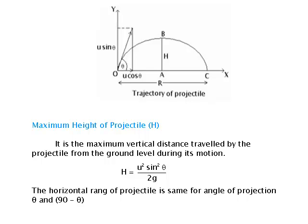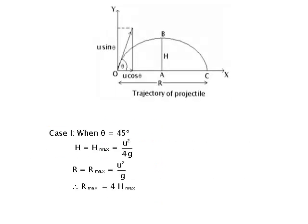Maximum height of the projectile h: the time of flight is the same for angles of projection θ and (90° − θ). Case 1 — when θ = 45°: h_max = u²/4g and R_max = u²/g, giving R_max = 4h_max. Case 2 — when θ = 90°: h = u²/2g and R = 0.